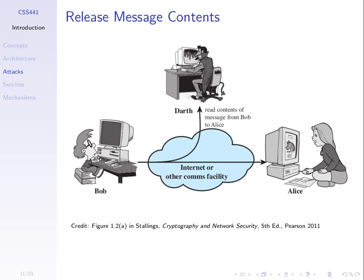How do we stop that? What mechanism could we use so that even if Darth intercepts the message, he cannot read the contents? Encryption — you've probably used encryption deliberately, and it's used in the background whenever you communicate across the internet. When Bob sends a message to Alice, before sending it across the network he encrypts it. He sends an encrypted form such that even though Darth can intercept the encrypted message, he cannot decrypt it to get the original message back — whereas Alice can. The focus of the first half of this course is on how we do that encryption, how we provide confidentiality.